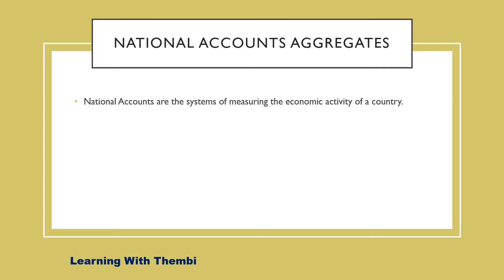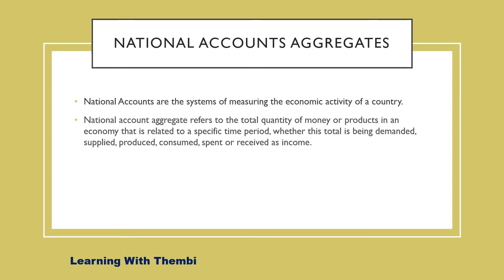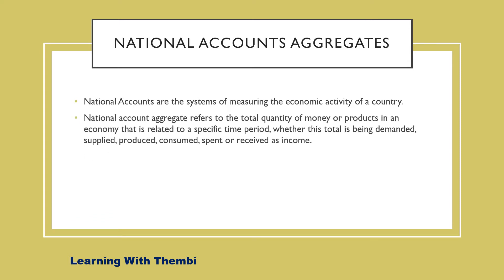This allows the government to make informed economic decisions. Aggregate refers to the totals. So if we're talking about national accounts aggregate, we're referring to the total value of economic activities happening in the country. To give a broader definition, national accounts aggregate refers to the total quantity of money or products in an economy that is related to a specific time period — whether this total is being demanded, supplied, produced, consumed, spent, or received as income.